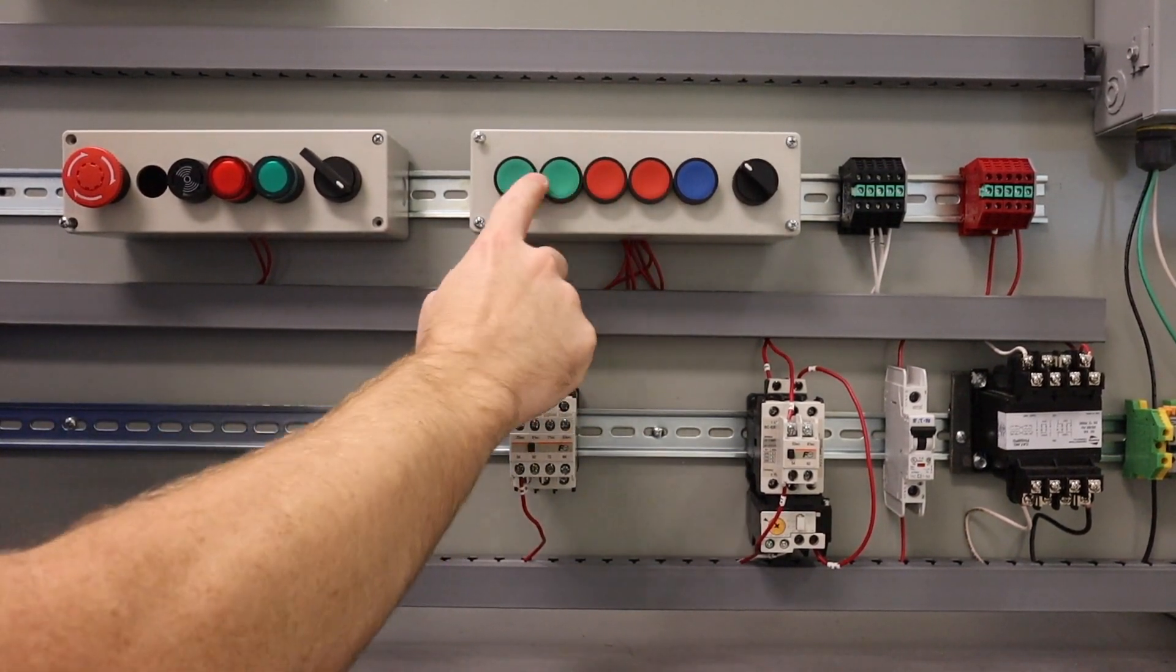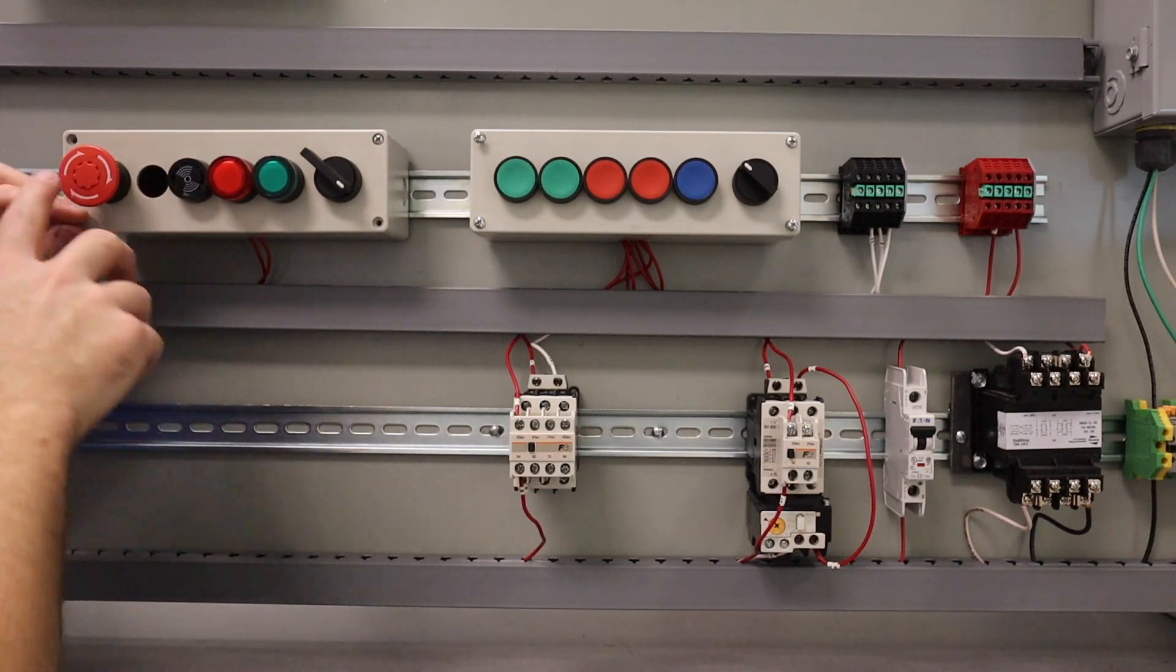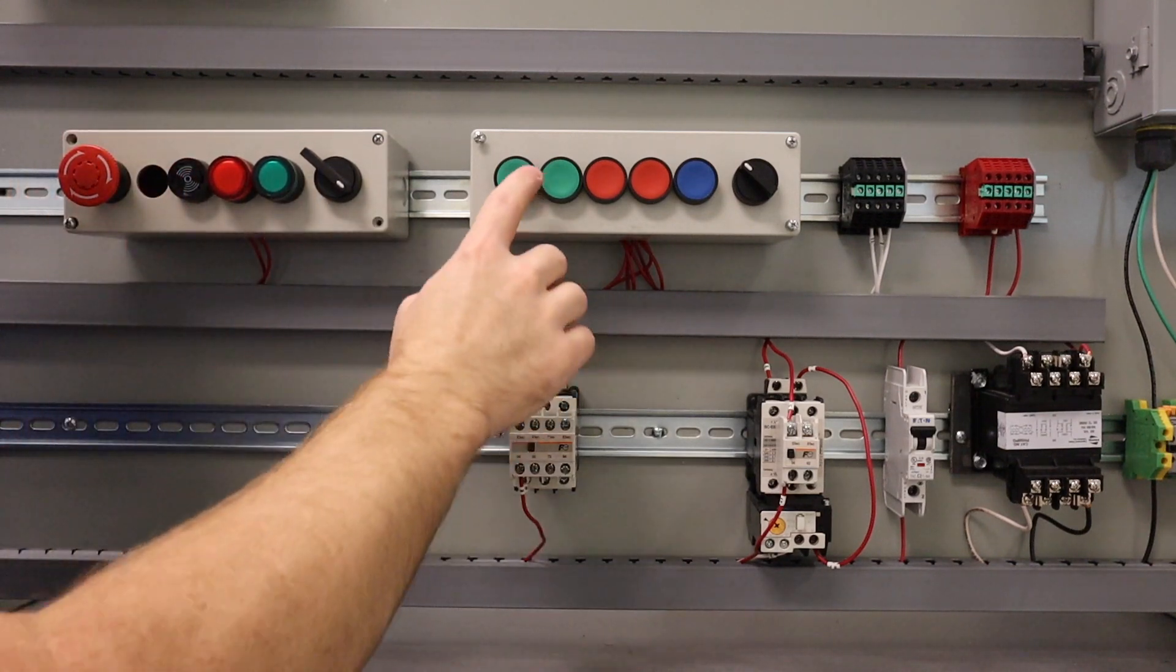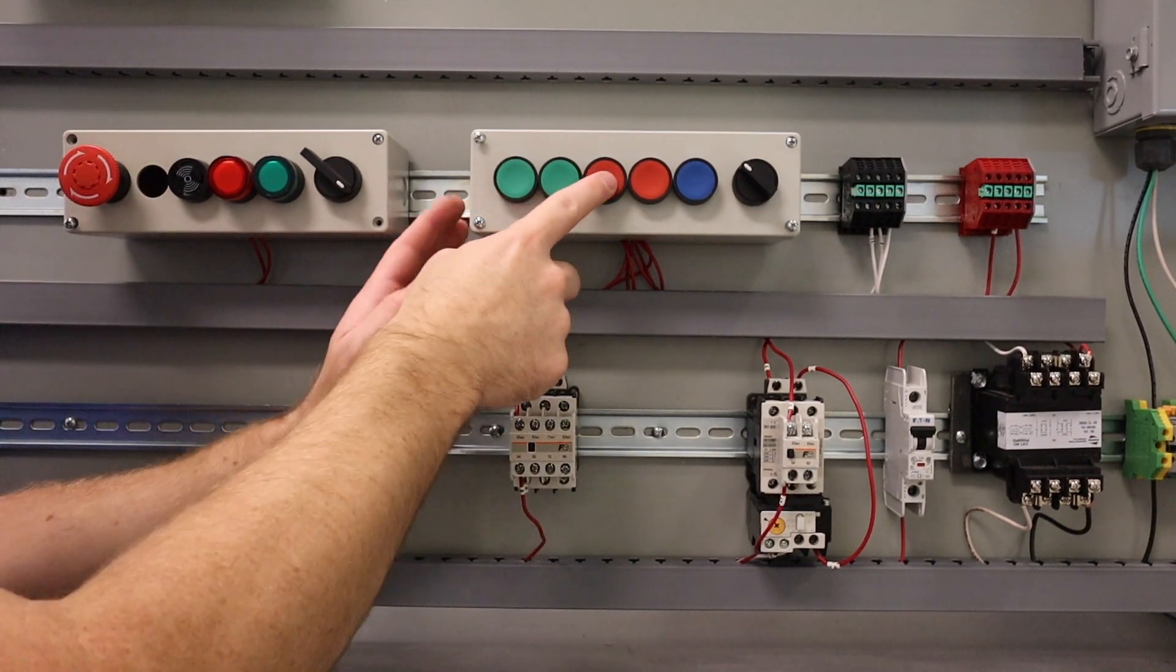I put in my e-stop. If my e-stop is depressed, nothing is going to run. If it is closed - the contacts are closed on it - then I press motor one and it pulls in. If I hit the stop button for motor one, it turns off.